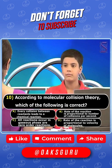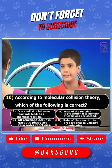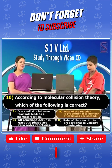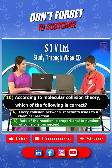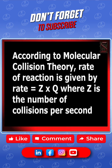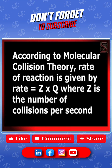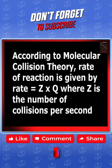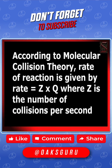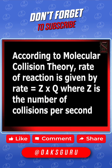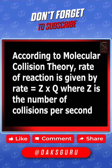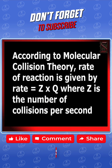I'm not sure, but I will go with D. Well, option B is the right answer. According to molecular collision theory, rate of reaction is given by: rate = Z × Q, where Z is the number of collisions per second